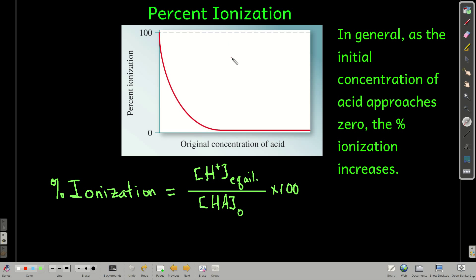Now, percent ionization. We actually calculated the percent ionization when we did the 5% rule. But here's the definition. Percent ionization is equal to the concentration of hydrogen ion at equilibrium divided by the initial concentration of the acid times 100. And if you look at this graph, this shows percent ionization versus the original concentration of the acid. The less concentrated the acid is, the greater the percent ionization. If you think about that, that makes sense. If we start with a really dilute solution, then there's a lot of room in that solution for the acid to dissociate. And so, in general, as the initial concentration of acid approaches 0, the percent ionization increases.